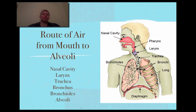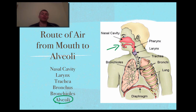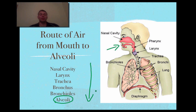The first aspect we really want to understand is the route of air from mouth to the alveoli. Obviously it goes in here, but to get it to those little tiny air sacs that are the alveoli, there's a route that's followed: nasal cavity, larynx, trachea, bronchus and bronchioles, down to the alveoli — and that could well present itself as a question.